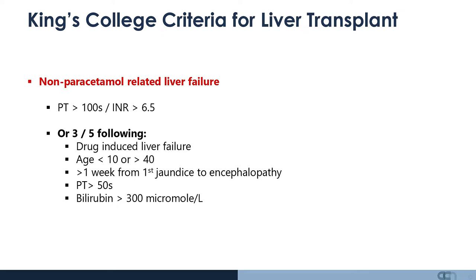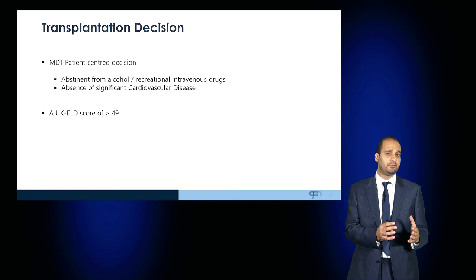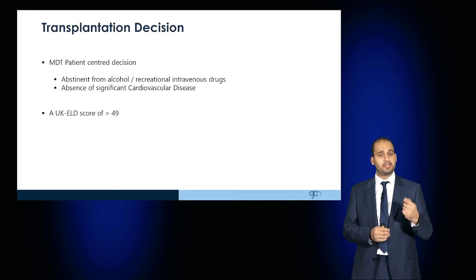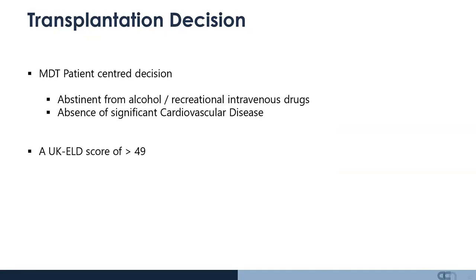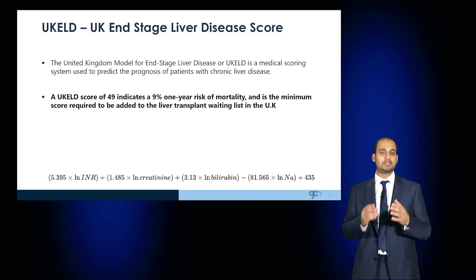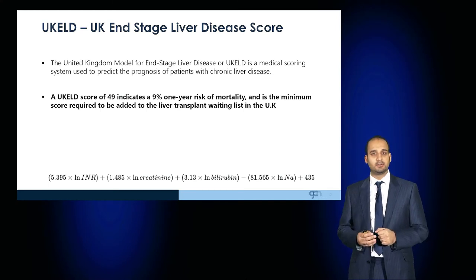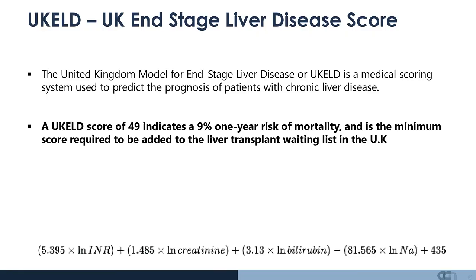The decision for transplantation is a complicated multidisciplinary team one with a patient-centred approach. The patient must be motivated to be abstinent from alcohol and recreational drugs, and have absence of significant comorbidities. A UKELD score of more than 49 is required for the patient to be added to the list. The UKELD score — United Kingdom End Stage Liver Disease Score — is a medical scoring system that helps prognosticate patients with chronic liver disease. A score of 49 indicates a 9% one-year risk of mortality, the minimum score required to be added to the liver transplant waiting list in the UK.